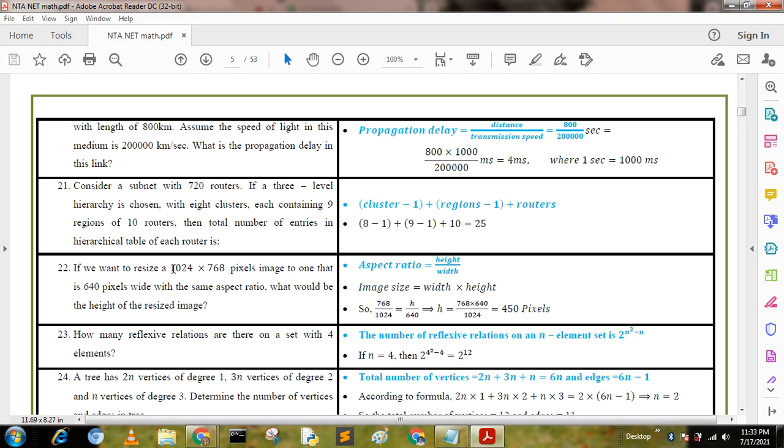Second question: If we want to resize a 1024 by 768 pixel image to one that is 640 pixels wide with the same aspect ratio, what would be the height of the resized image? From graphical theory we know that aspect ratio equals height by width. We put the value: 768 by 1024 equals h by 640. From this formula we can calculate h equals 450 pixels.